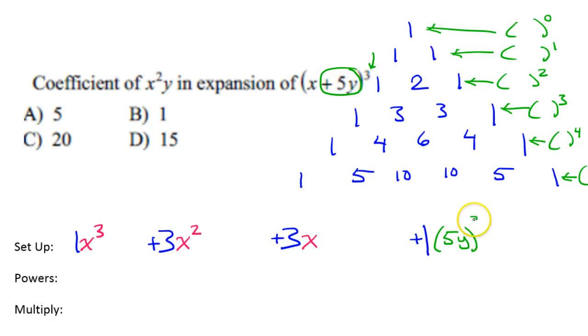So I will do 5y to the third power, and then I will decrease as I go to the left. So that will be 5y squared, and then another 5y. Okay, that's it for the setup.